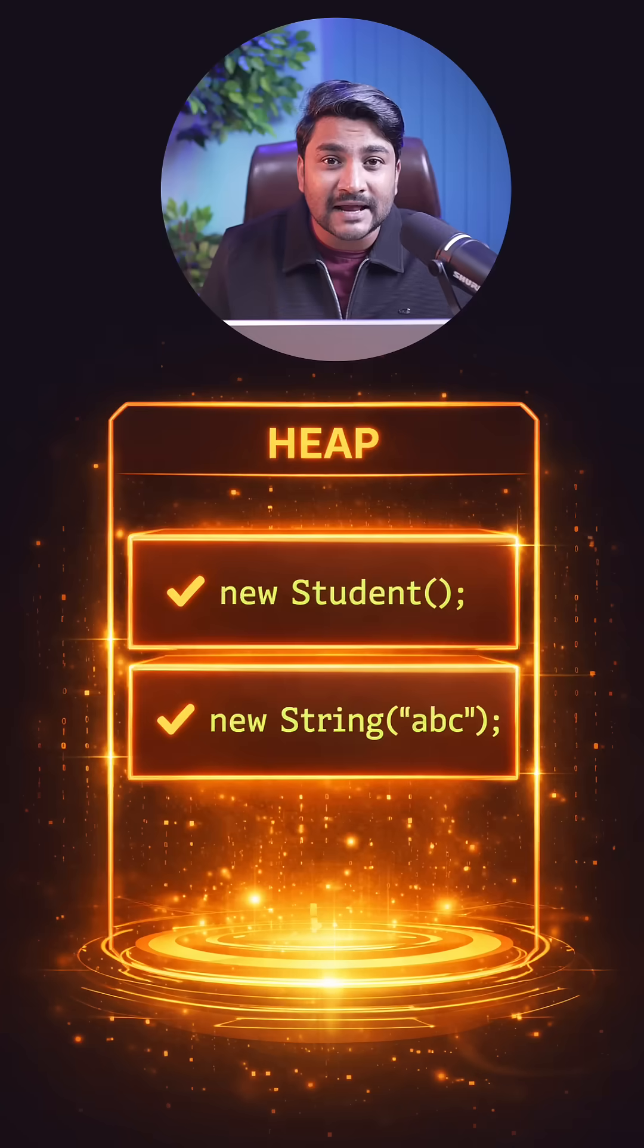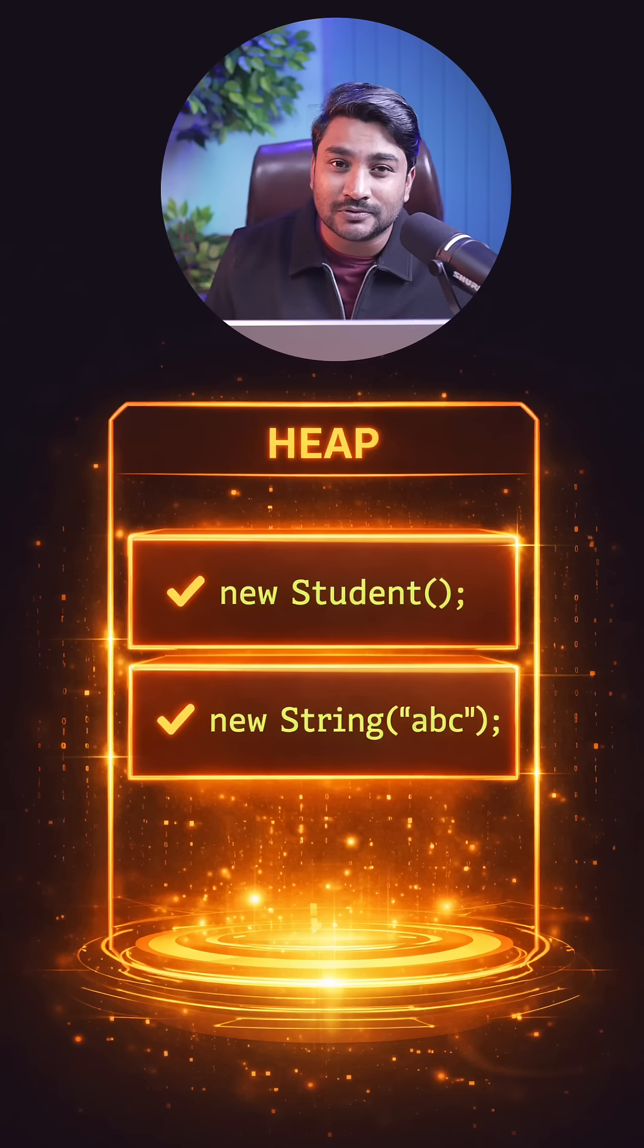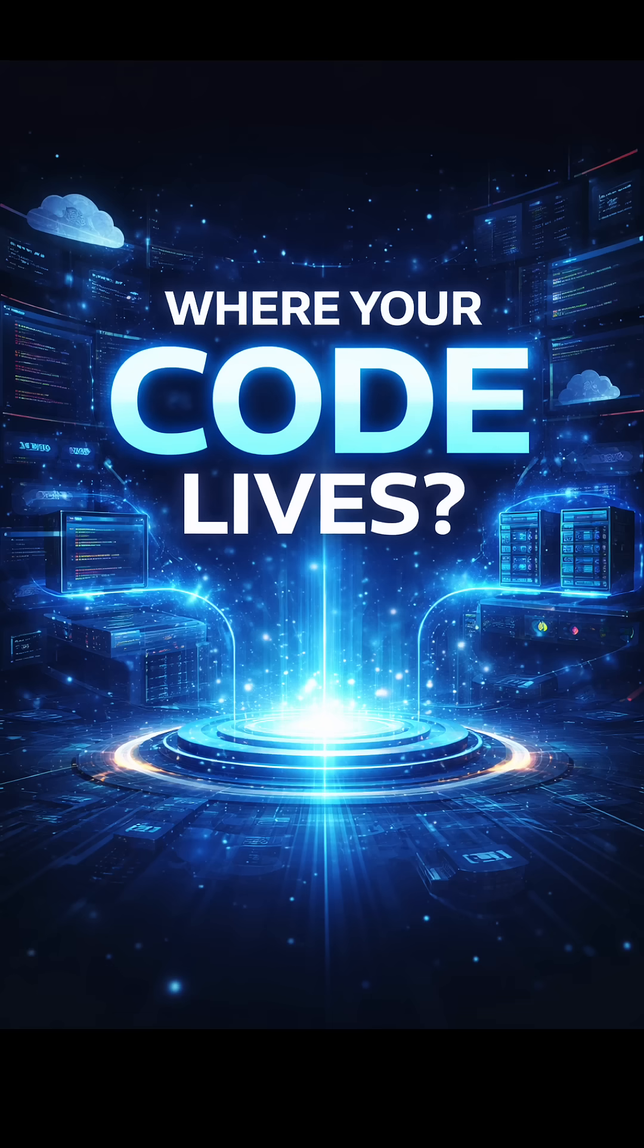When we talk about complex objects like student, customer, string, they all go to heap memory. Now let's just see some real Java code and let's just understand how our code live inside the memory.